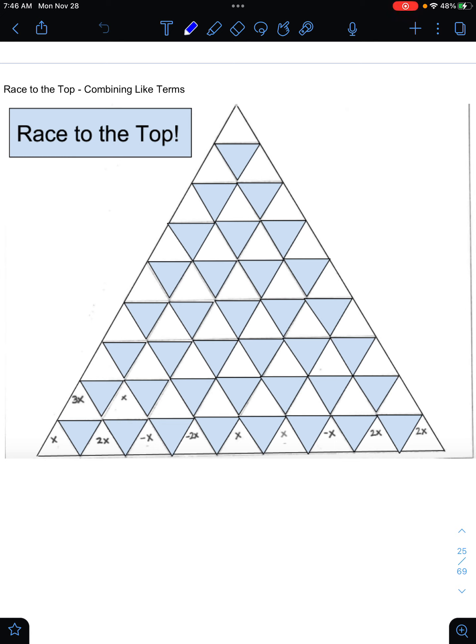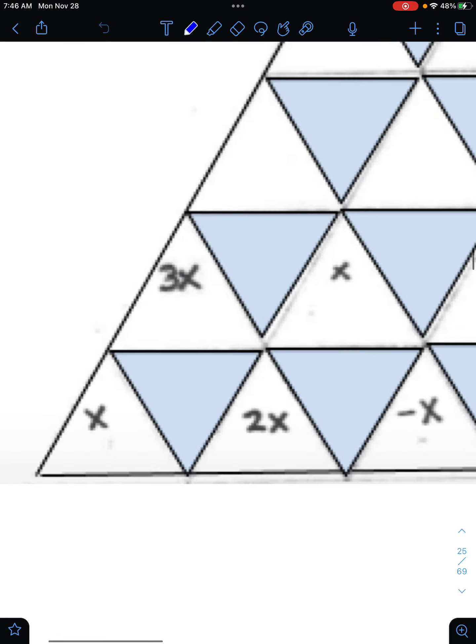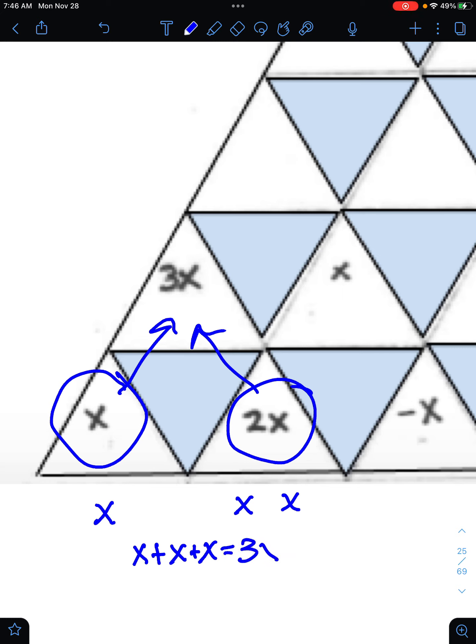So the goal of this puzzle is you're going to fill out all of the white triangles by combining the like terms below them. For example, here, x plus 2x equals 3x, so they wrote the answer up there. The reason it equals 3x is because x has a value of a single x, 2x has a value of two single x's. So when you combine all of those x's, you have x plus x plus x, or 3x.